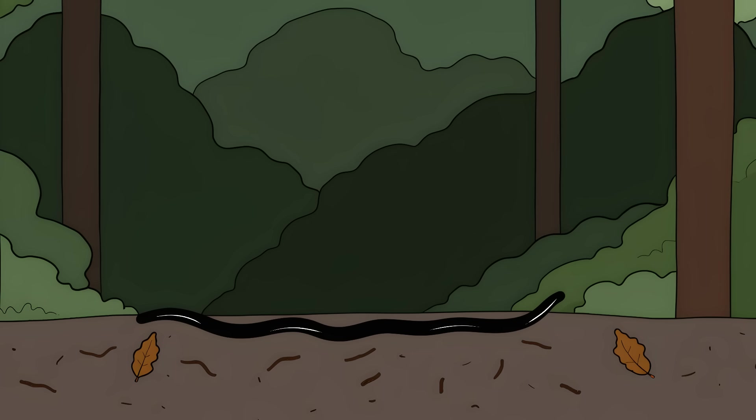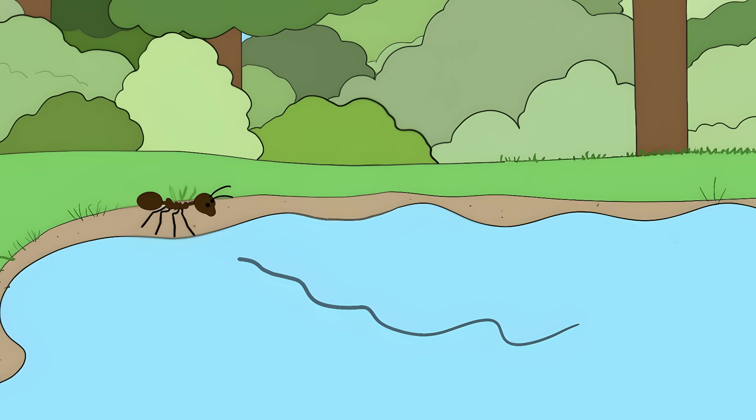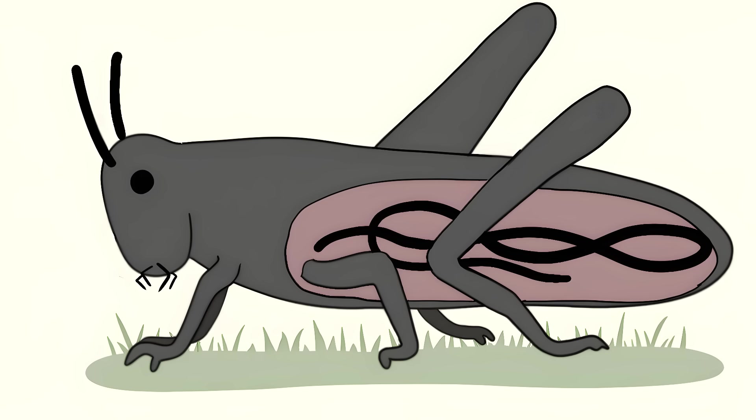Number 3. The Puppet Master Worm. The horsehair worm looks like a piece of black string, but it's one of nature's most disturbing puppeteers. It starts as a microscopic larva in water, waiting for an insect to take a drink. Once inside, it grows silently, feeding on the insect's insides until it's ready.